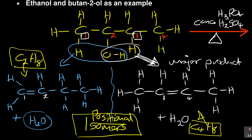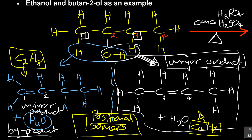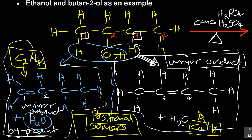The major product is the one where we took the hydrogen from carbon three. The other one — where we took from carbon one with three hydrogens — is the minor product, sometimes called the byproduct. Byproducts form in a side reaction; they are not the intended product. The main reaction you want is the major product, but unfortunately you also end up with the byproduct.